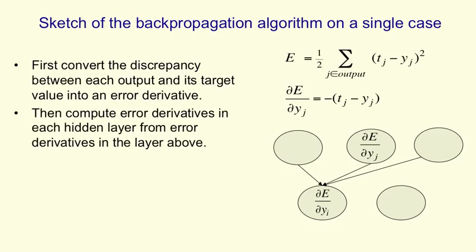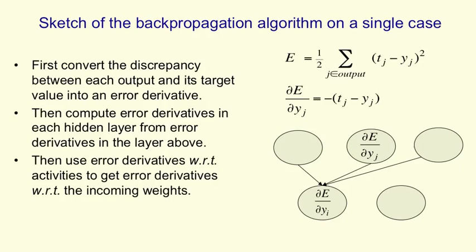Once we have the error derivative with respect to the output of an output unit, we use all those error derivatives in the output layer to compute the same quantity in the hidden layer that comes before it. The core of backpropagation is taking error derivatives in one layer and computing the error derivatives in the layer that comes before that. We want to compute DE/DYI, and when we change the output of unit I, it changes the activities of all the output units, so we have to sum up all those effects — combining them using the same weights as in the forward pass.